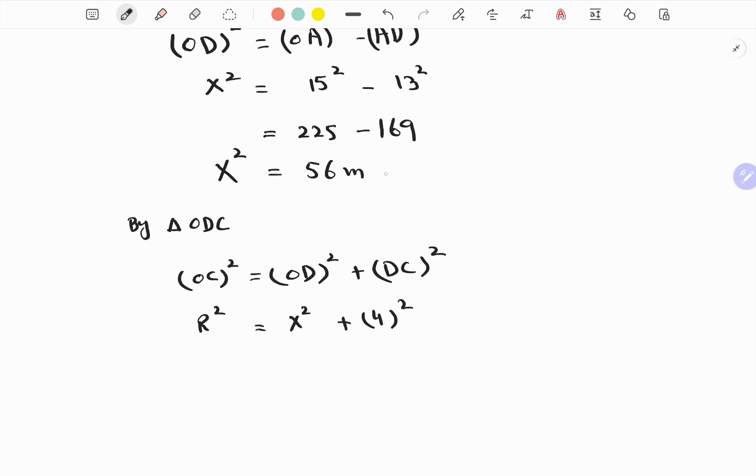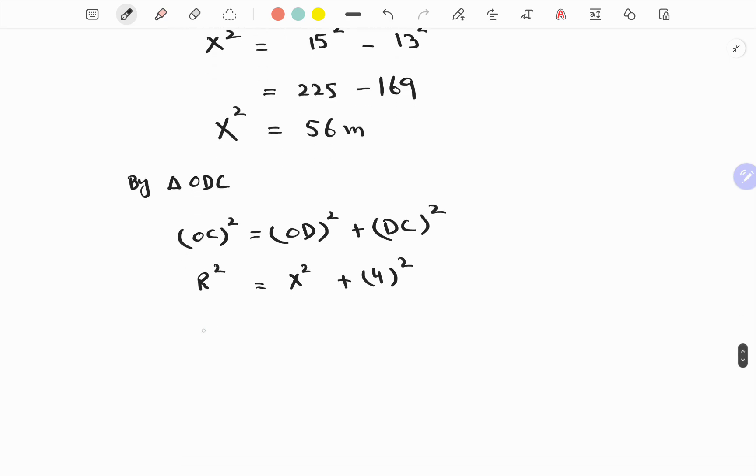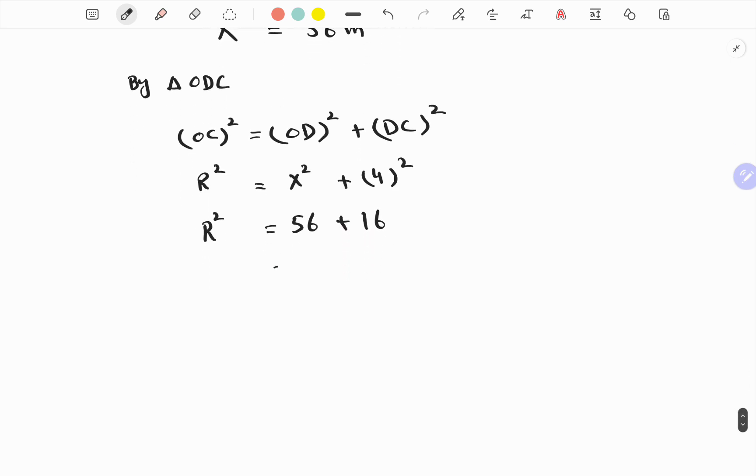Now from here, x squared is equal to 56 meters, so R squared is equal to 56 plus 16, which is equal to 72. And we can write it as R squared is 36 multiplied by 2.